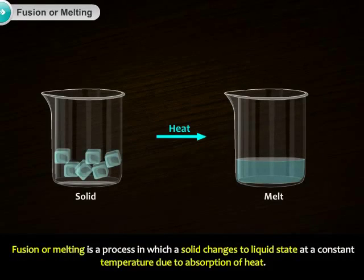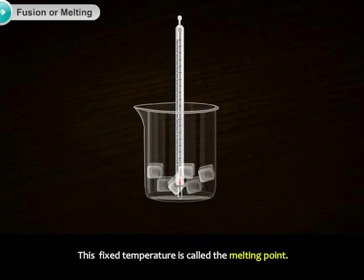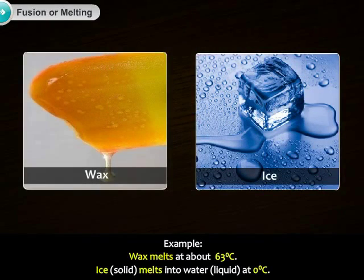Fusion or melting is a process in which a solid changes to liquid state at a constant temperature due to absorption of heat. This fixed temperature is called the melting point. For example, wax melts at about 63 degrees Celsius, and ice melts into water at 0 degrees Celsius.